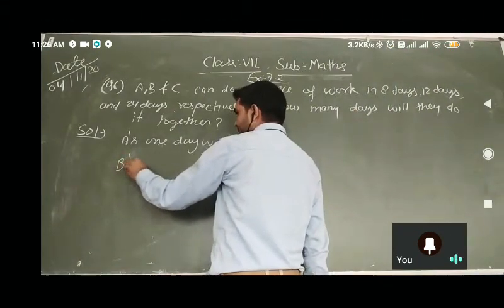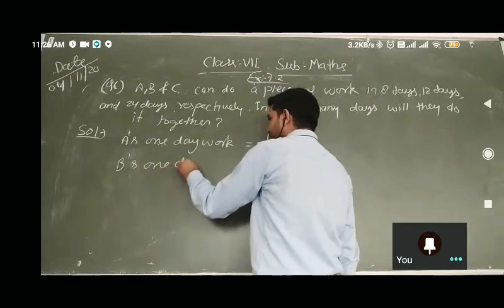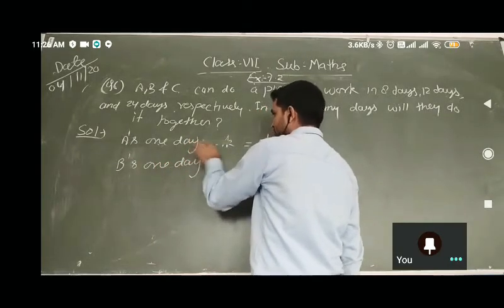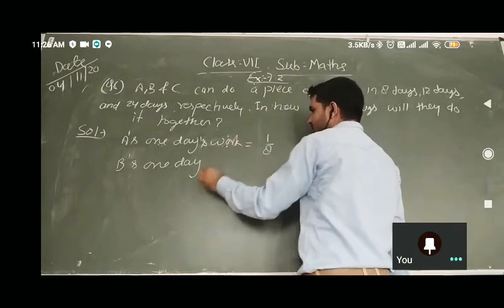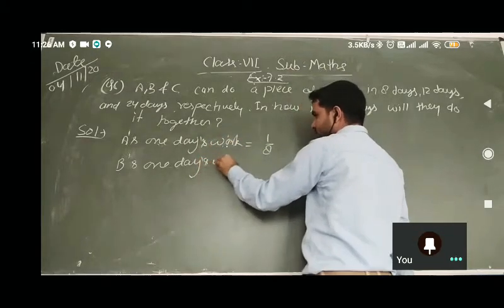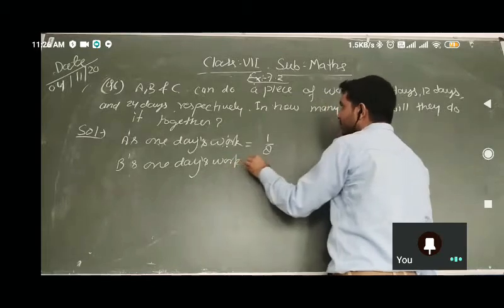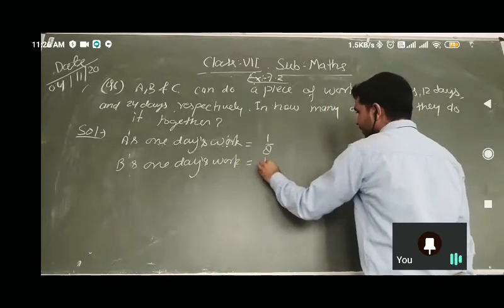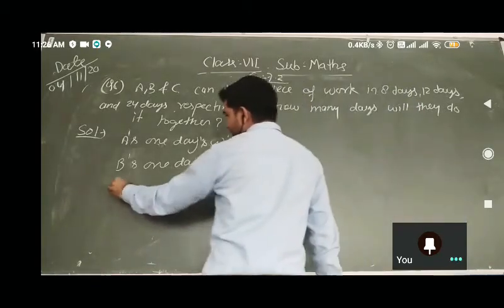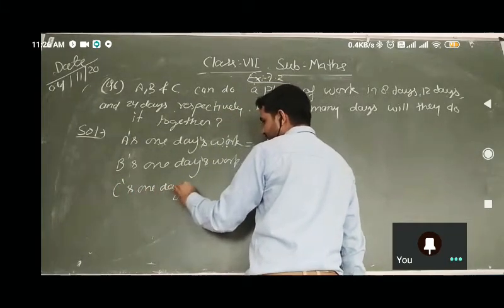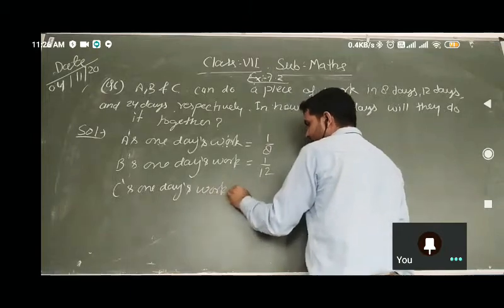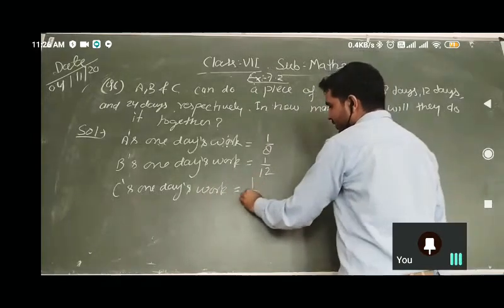B's one day work is 1 upon 12. C's one day work is 1 upon 24.